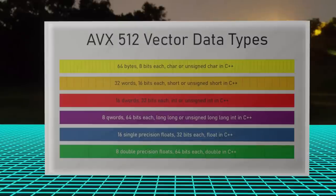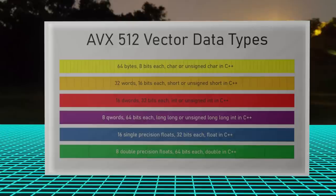It's absolutely extraordinary — those 512 bits of the vector registers can be used as lots of different sorts of data. You can see a chart of the different data types that these 512-bit vectors can represent. A CPU could perform 64-byte operations in less than a clock cycle. You can do 32 operations on short integers or words at once, 16 operations on D words, 8 operations on Q words or 64-bit integers, 16 operations on single-precision floats, and 8 operations on doubles.